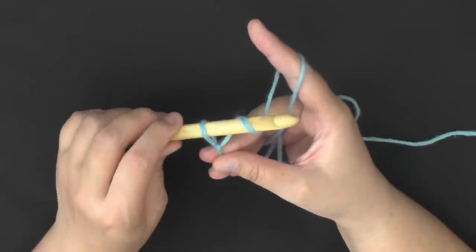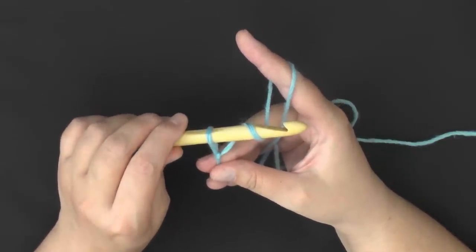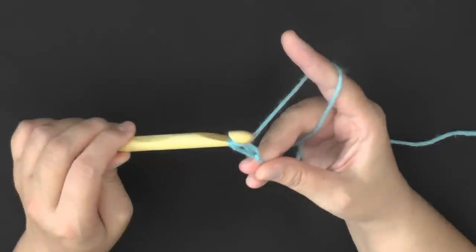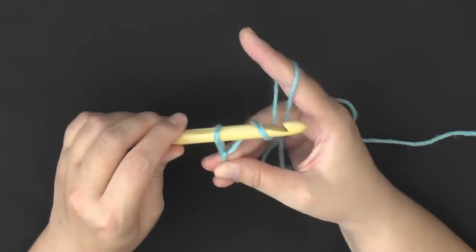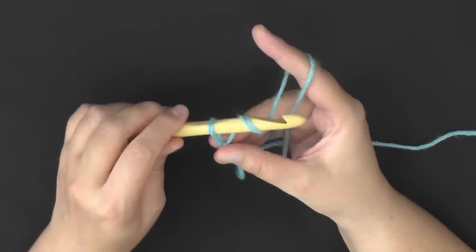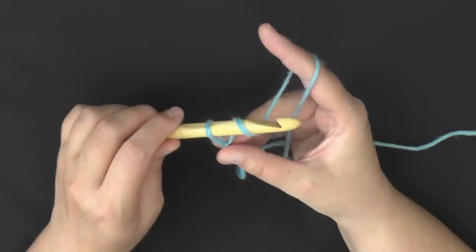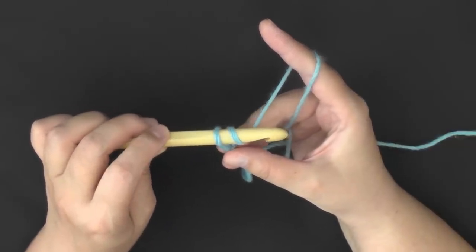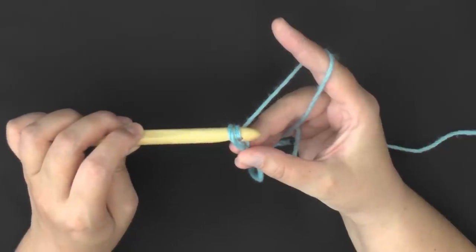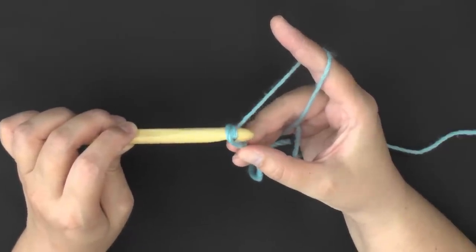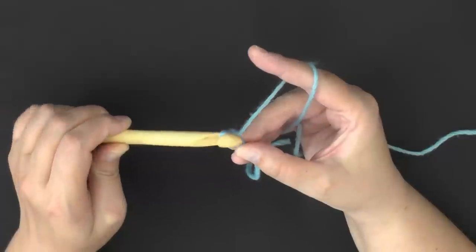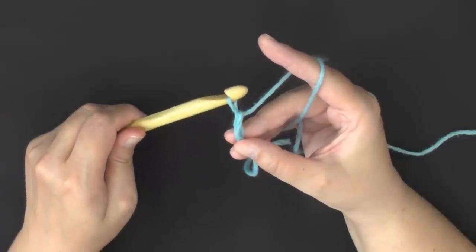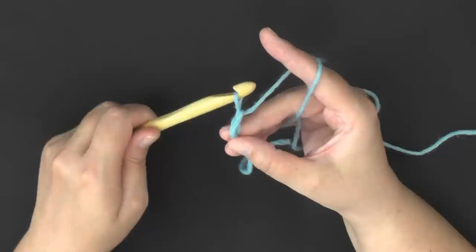Now in order to pull it through, you don't want to have your hook facing up because if you do it's just going to grab your loop and there's no way you'll get it through. The art and practice of this is to have it pointed down and to pull your yarn through that loop. And that's your first what's called a chain.